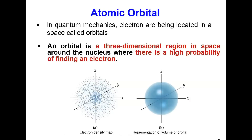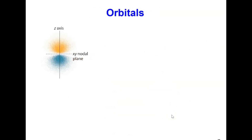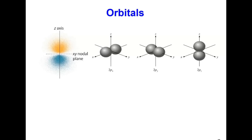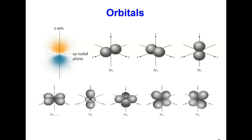This illustration shows the shape of the S orbital, which has a spherical shape. We also have a P orbital that has a dumbbell shape, and a D orbital that has a cloverleaf shape.